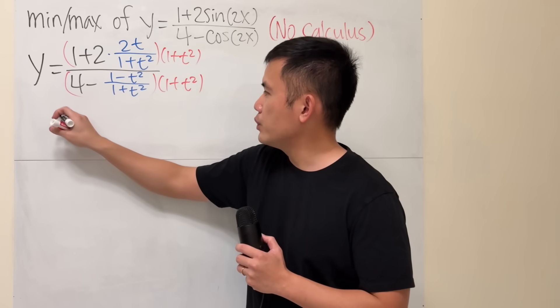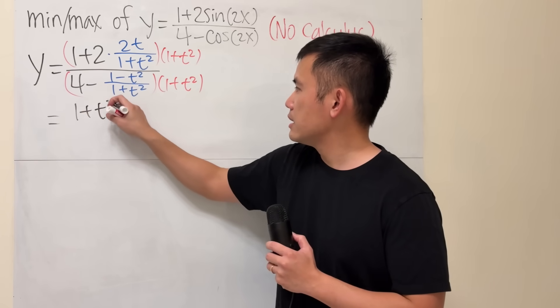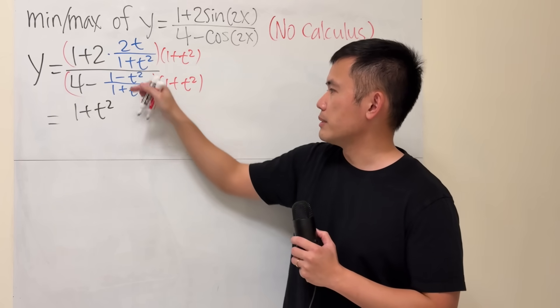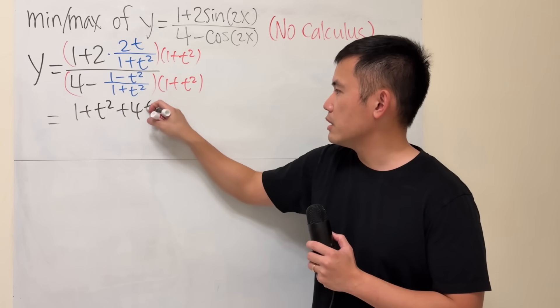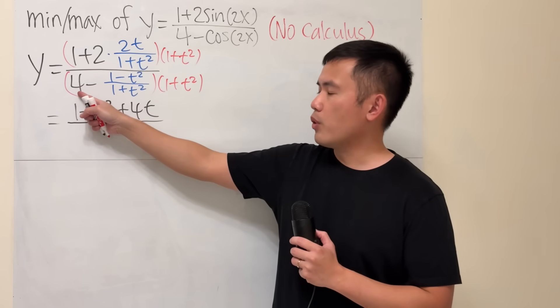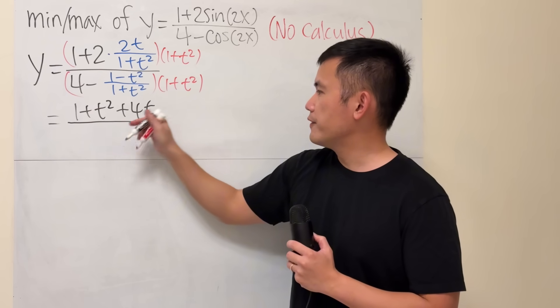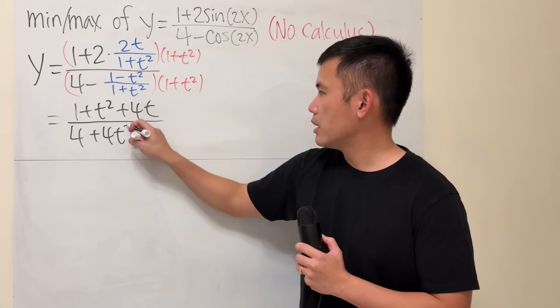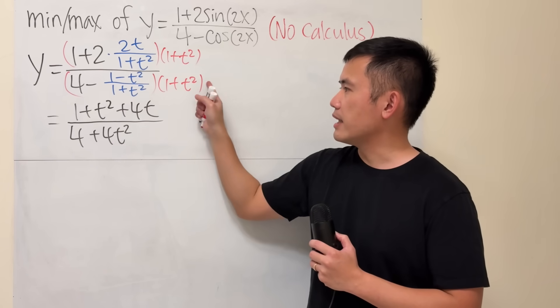And then work that out. Take this times 1, we will just get that. And then take this times that, they cancel. And we just have to work out 2 times 2t, which is 4t. Over, take this times 4, distribute the 4. We get 4 plus 4t squared. And then take this times that, they cancel.